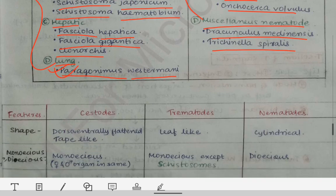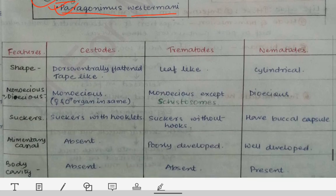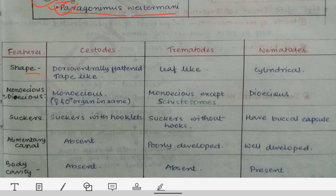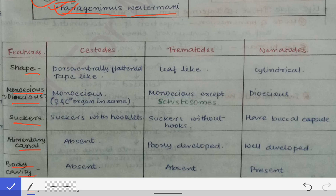Now we will see the differences between cestodes, trematodes, and nematodes. The difference lies in many factors like shape, whether they are monoecious or dioecious, presence of suckers, alimentary canal, and body cavity. Regarding shape, cestodes are dorsoventrally flattened — just like a measuring tape, which is flat. That is why they are also called tapeworms.